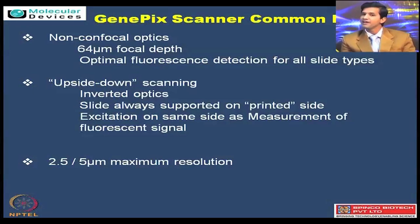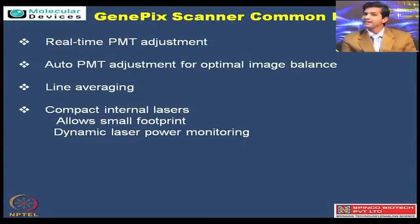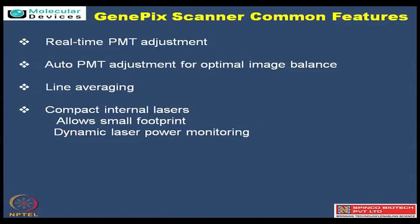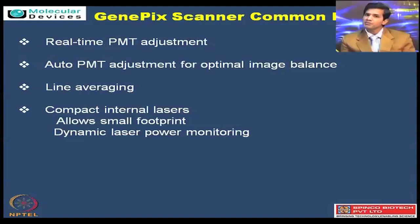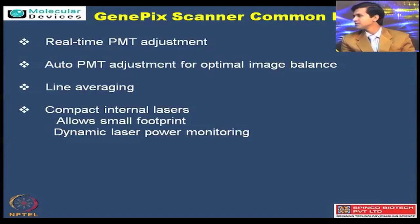The resolution at 2.5 or 5 microns based on the available system can also be used. Real-time PMT adjustment: PMT is the photomultiplier tube, and in real time, at the level of scanning, we can look at the data while the scanning is live. In this form, we can control the PMT live in between the scan. And then, auto PMT adjustment for those who are not familiar with how to control them — we have given an auto PMT option. This auto PMT option allows accuracy to get the best output, and GenePix Pro allows multiple scans by itself so the best PMT suitable for one application can then be seen immediately.